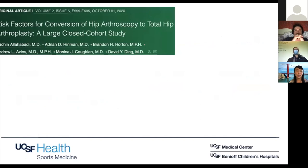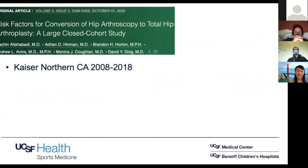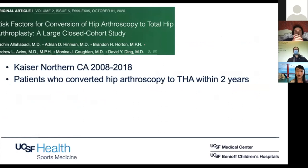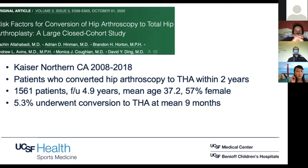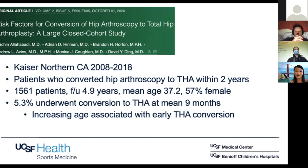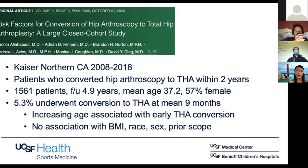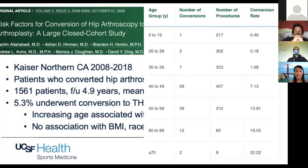Another study done by some of our residents is a Kaiser database study looking at Kaiser in North America — looking at who converted to total hip within two years. Mean age was 37, 57% female, about 5-year follow-up, about 5% converted to total hip and they converted early at about nine months. Similar findings: increasing age associated with early total hip conversion; no association found with BMI, race, sex, or prior hip scope. The conversion rates increase as the age of the patient increases.